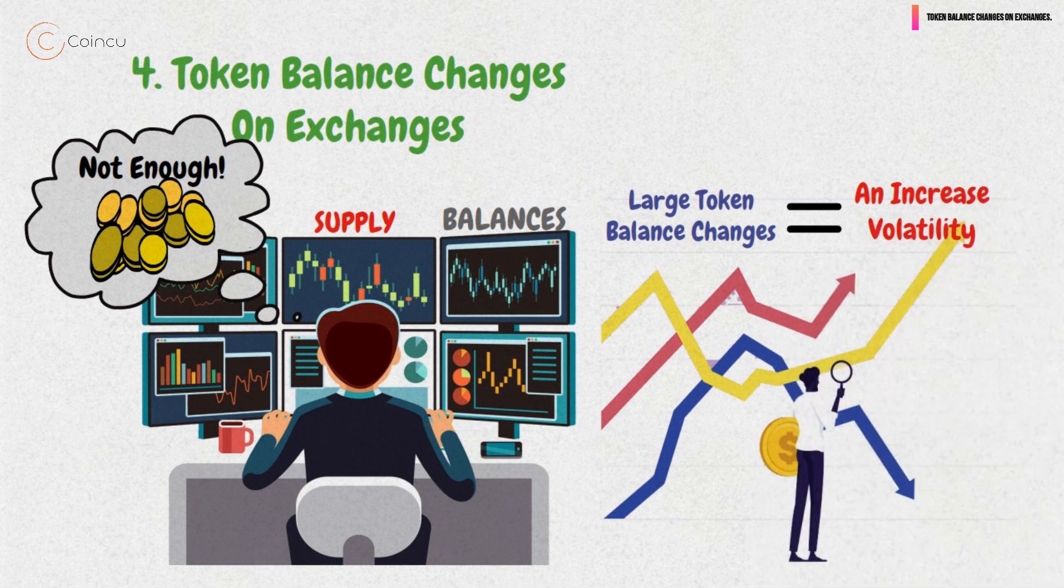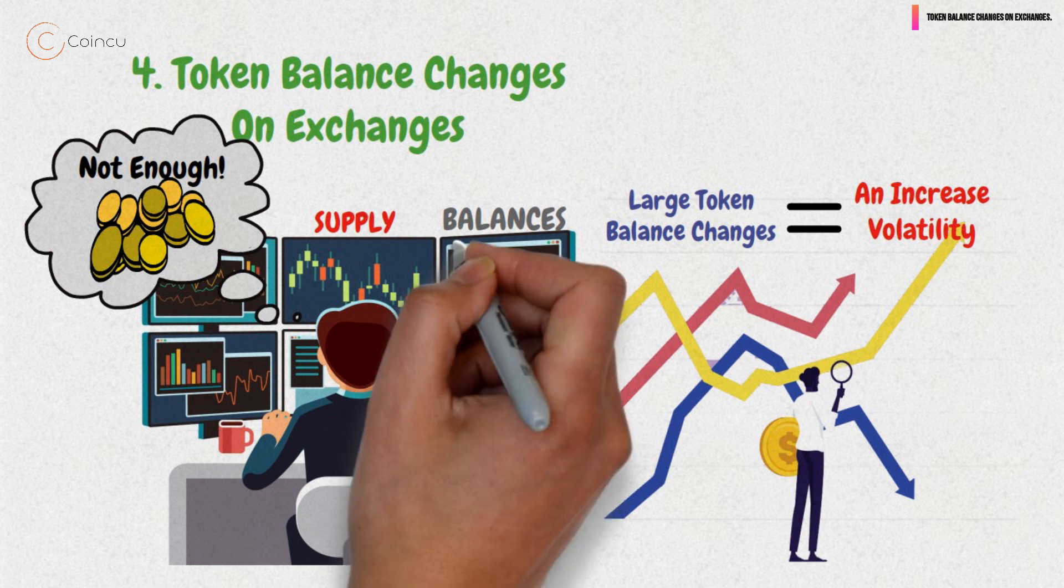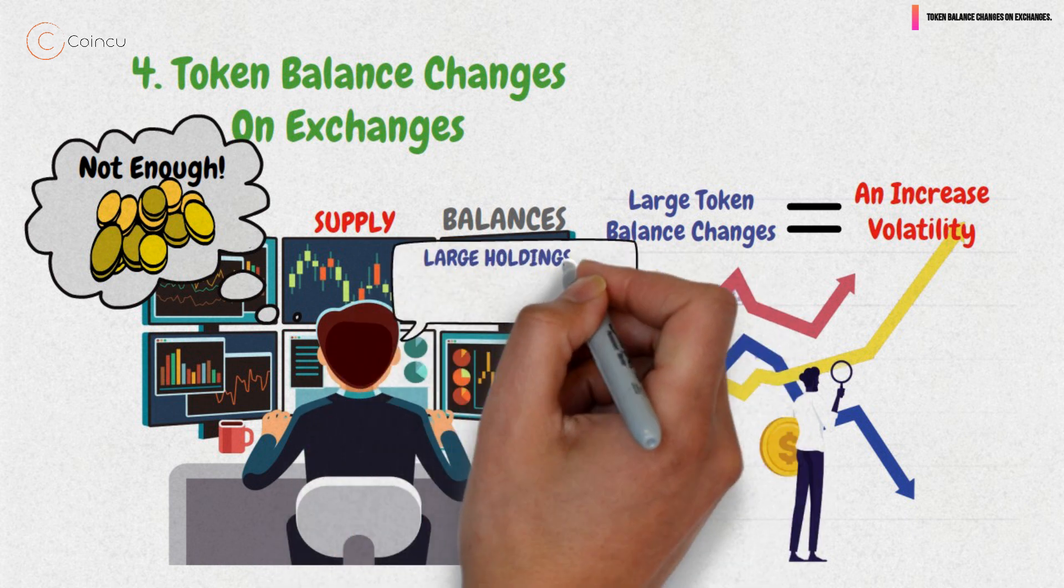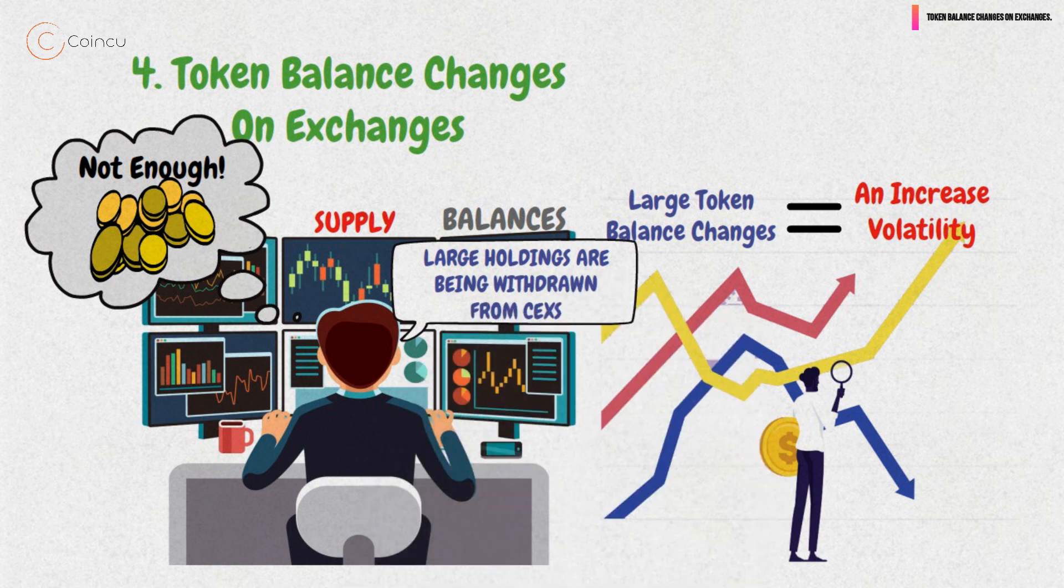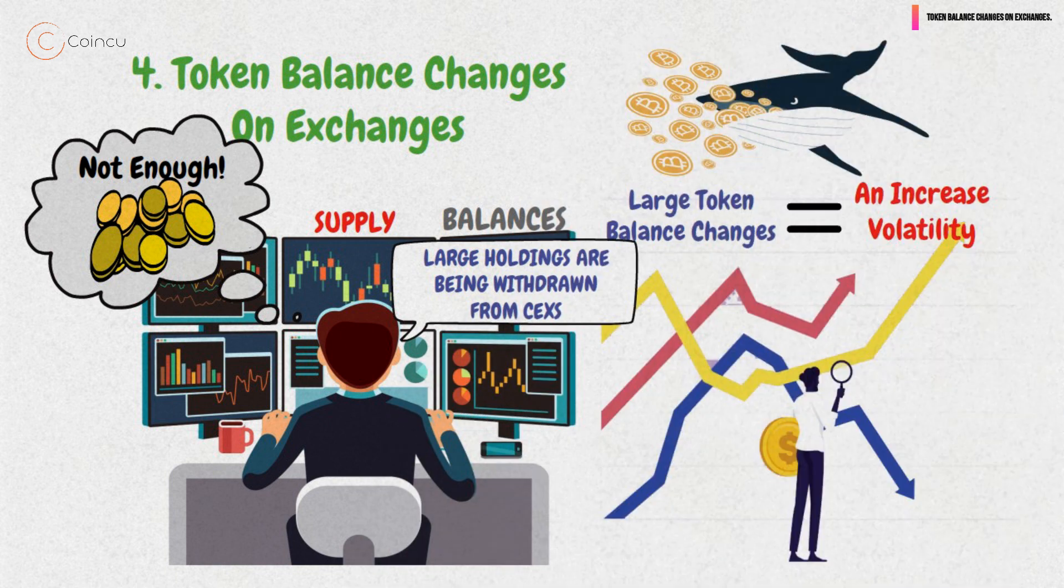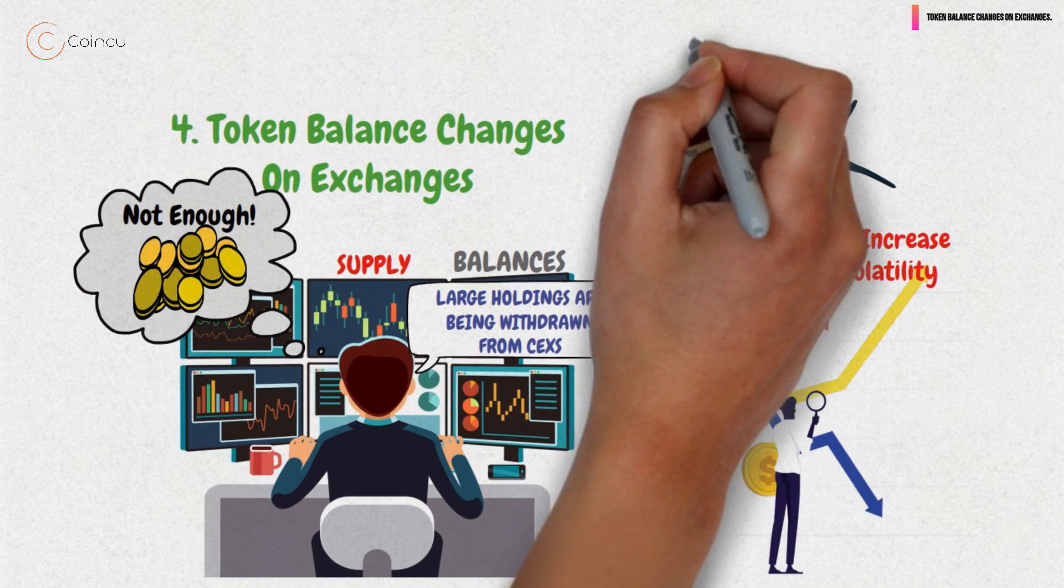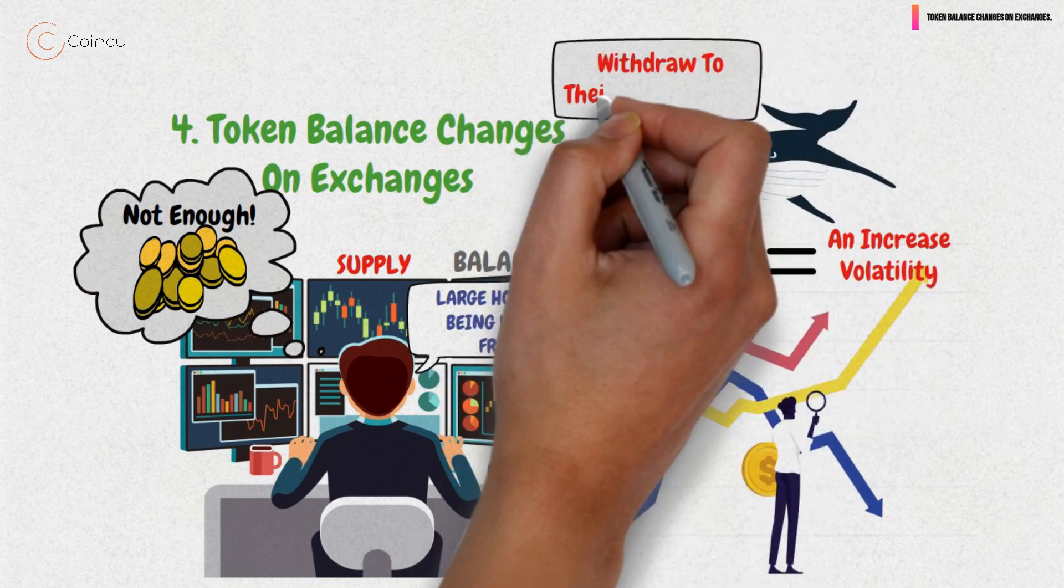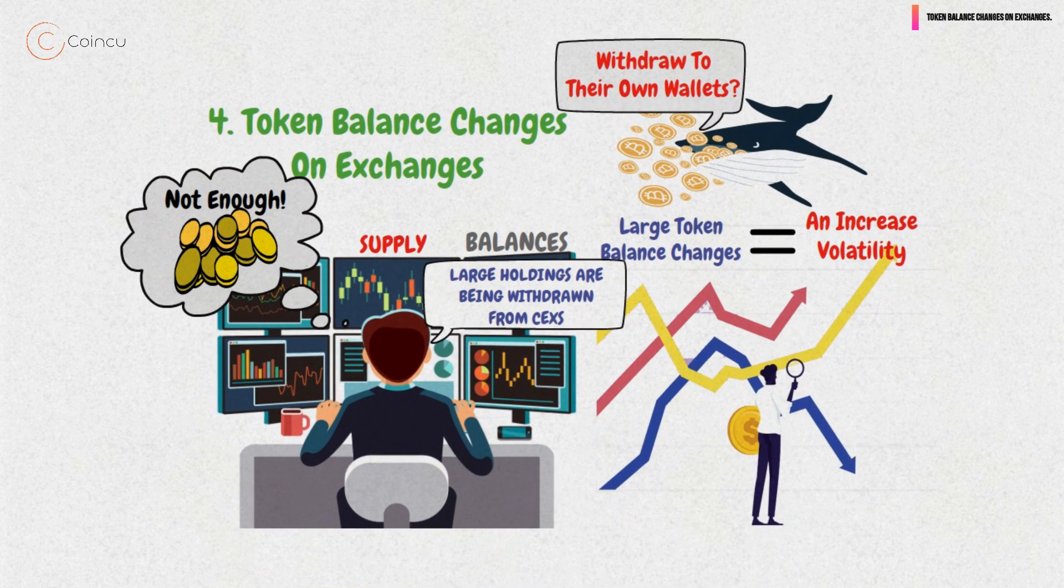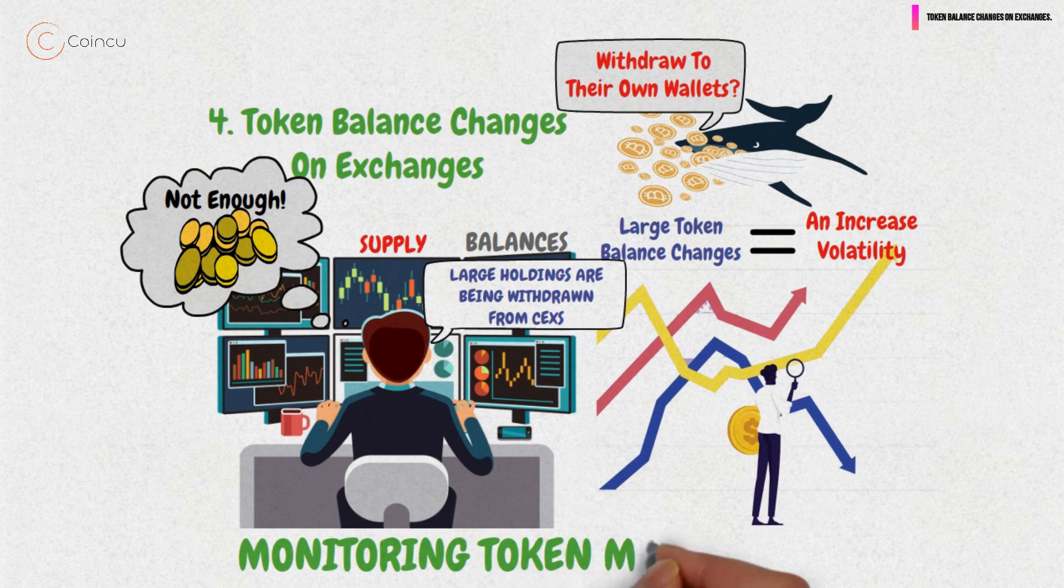For example, consider the opposite scenario of what we've just discussed about token balances. If large holdings are being withdrawn from CEXs, that may indicate that whales are accumulating the token. If they were looking to sell soon, why would they withdraw to their own wallets? This is how monitoring token movements can be useful.